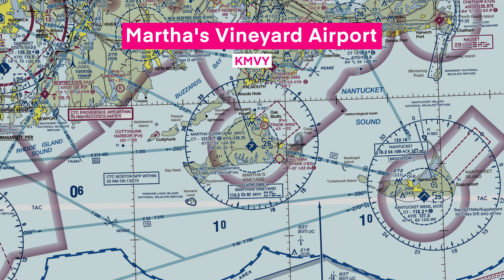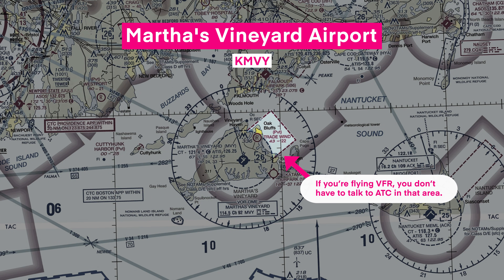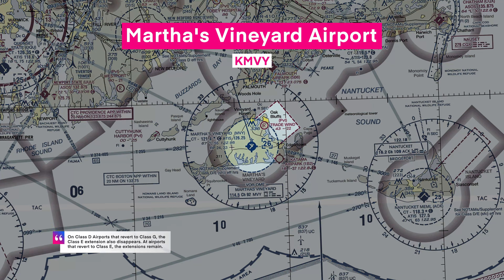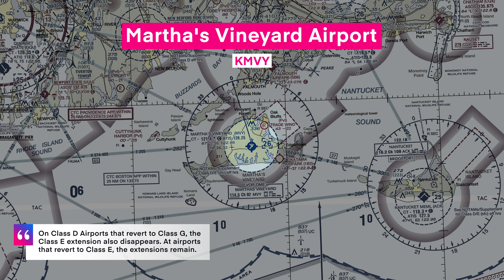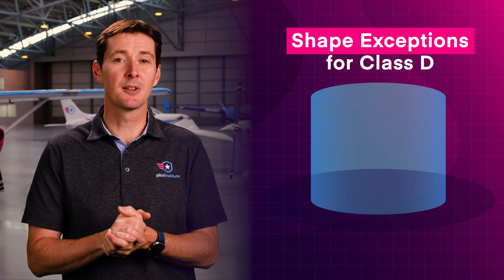This allows IFR aircraft to remain in controlled airspace during approach. Now, if you're flying VFR, you don't have to talk to ATC in that specific area. When the tower closes at Martha's Vineyard, which reverts to Gulf airspace, the Echo extension also disappears. At airports that revert to Echo airspace, the extensions remain.